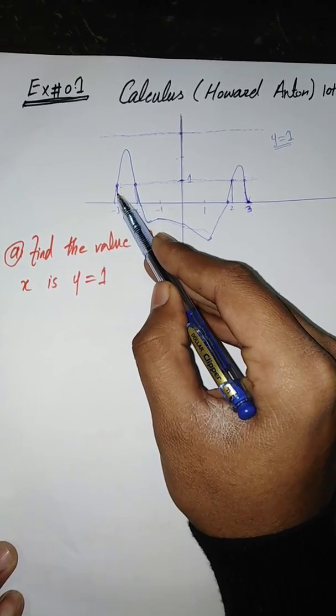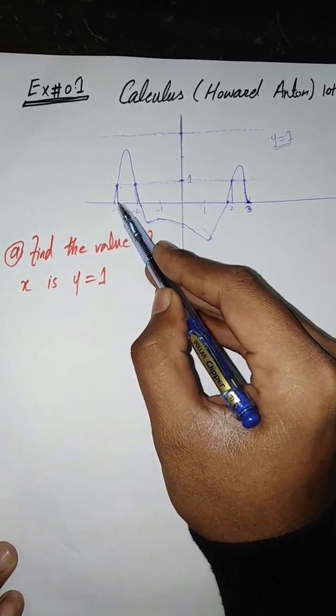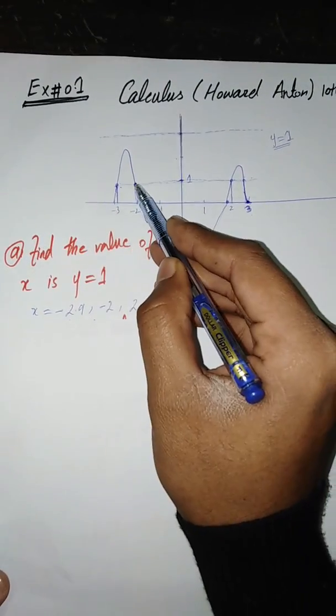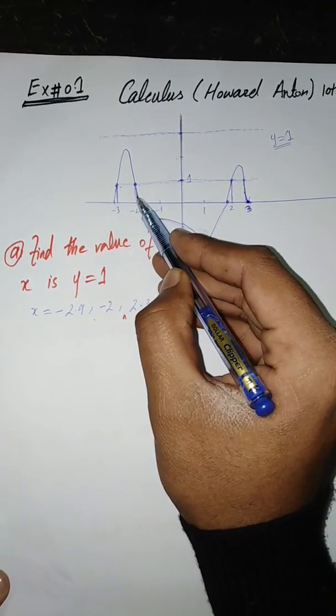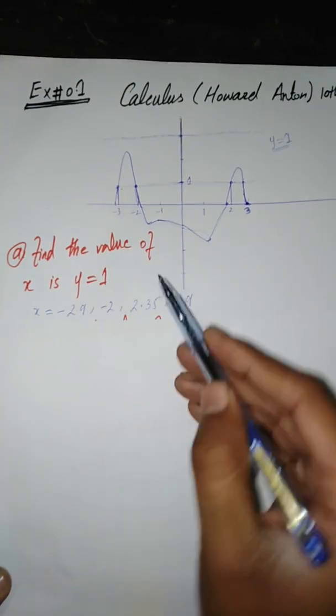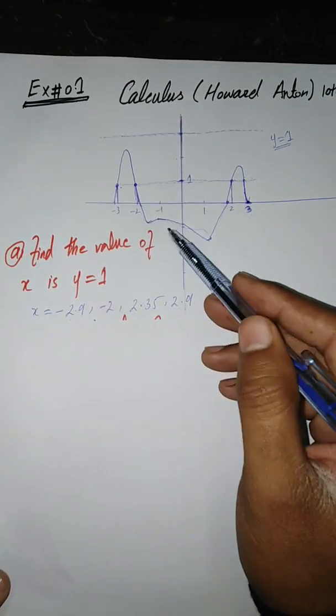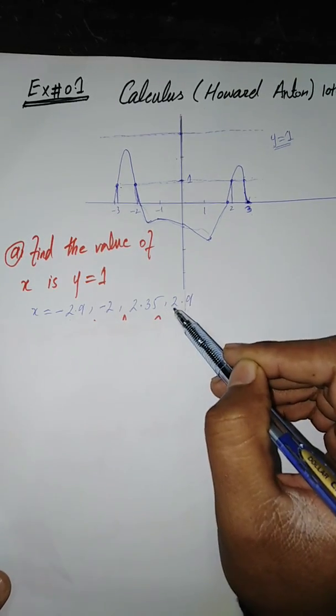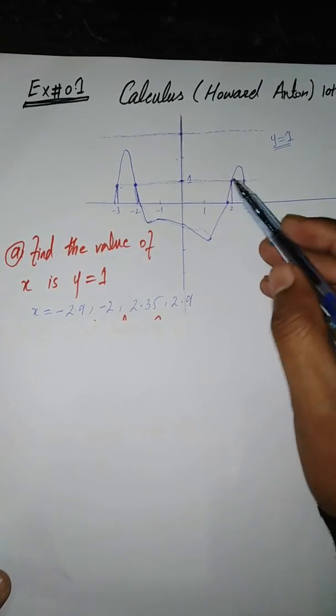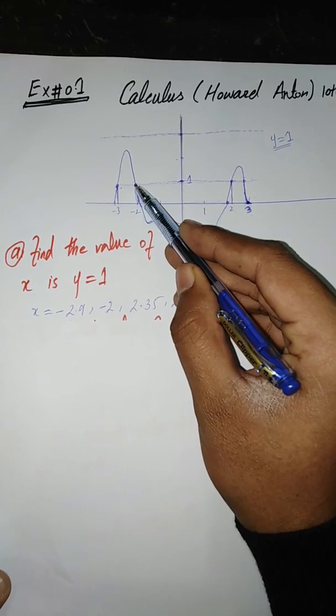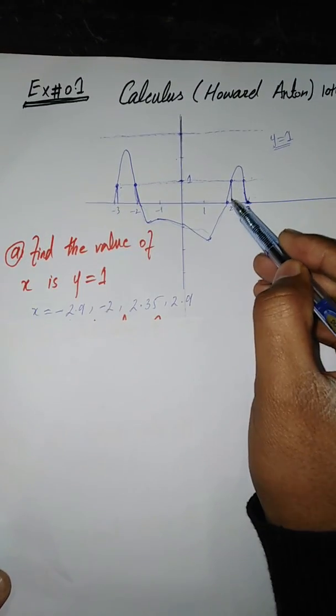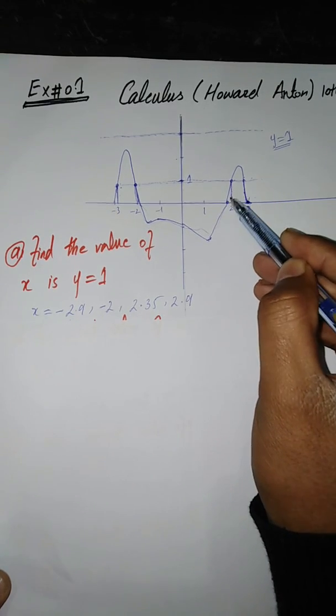Here the value of X is just minus 2.9 and here the value of X is maybe minus 2. We have to approximate, we write our answer using approximation. So we approximate at that point the value of X should be minus 2. At that point should be 2.35.